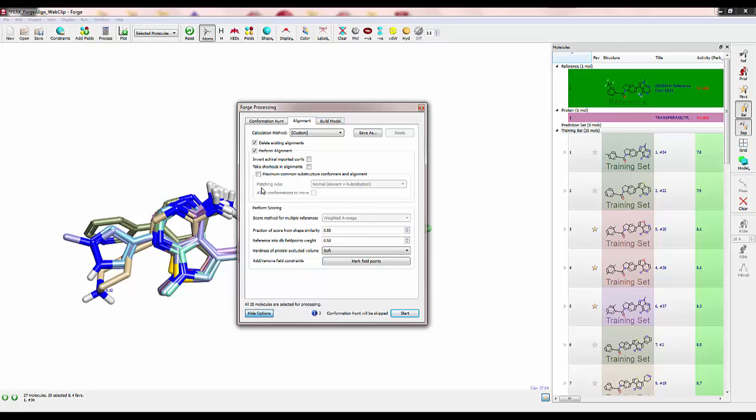Now we toggle on the MCS option and choose normal. Normal makes us match both the element and its hybridization. Clicking START will begin the alignment in MCS mode.